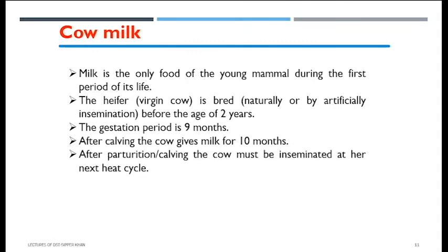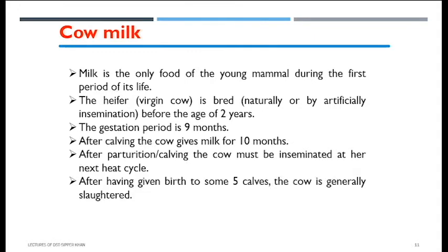After calving — giving birth to the calf, also called parturition — the cow must then be inseminated at her next heat cycle. We will go into this detail in later chapters. After having given birth to approximately five calves, the cow is taken out and slaughtered, depending on differences in yield and milk production.